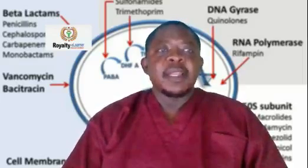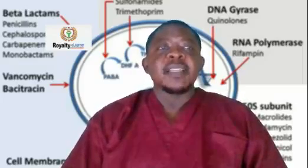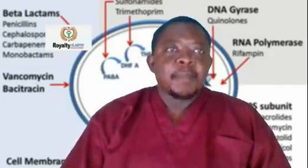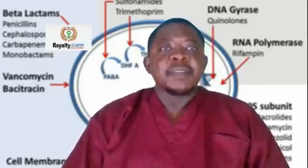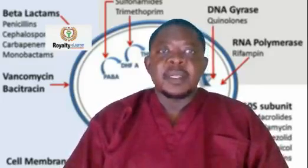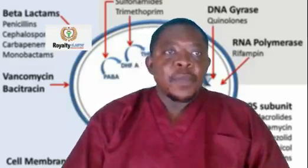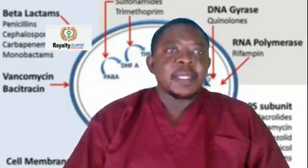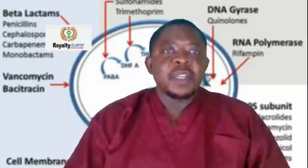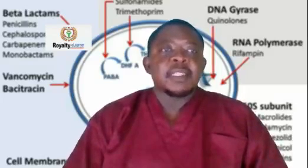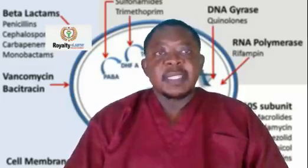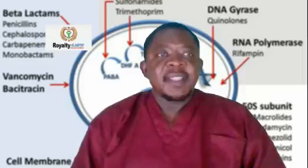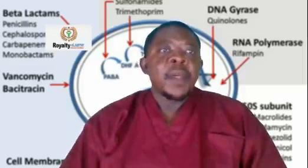Then we also looked at macrolides. Macrolides bind to the 50S subunits and have similar actions to aminoglycosides and tetracycline. For macrolides, they bind to the 50S subunits and stop the formation of peptide bonds between amino acids, preventing protein synthesis. They weaken the protein linkages within the bacteria, hence weakening the bacteria.